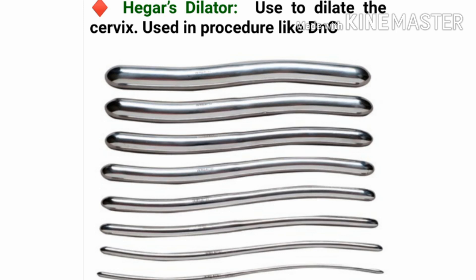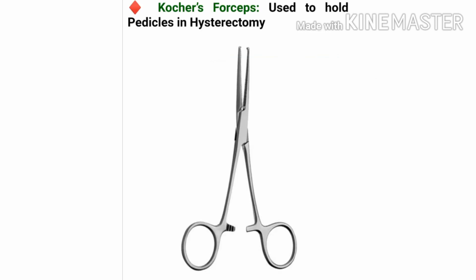Our next instrument is Hegar's dilator. It is used to dilate the cervix, and is used in procedures like D&C — dilatation and curettage. This is the Kocher's forcep, used to hold pedicles in hysterectomy, mainly in gynecological operations. It is also used for holding tissues or compressing bleeding tissues during operations.